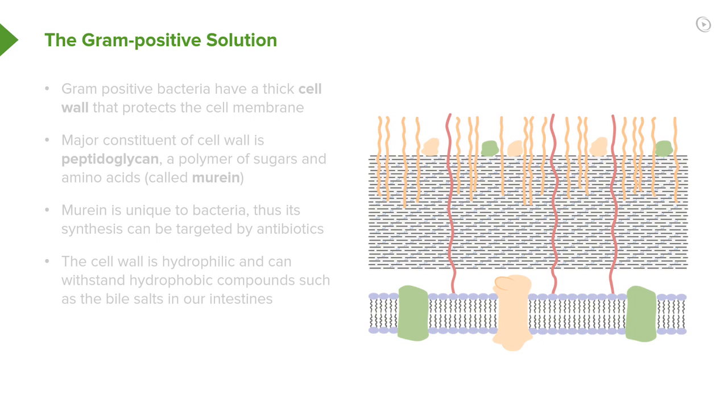So let's look at this in a little more detail. The thick cell wall again is called the peptidoglycan or murine. It's a polymer of sugars and amino acids. This structure is unique to bacteria. We don't find it anywhere else in the kingdom of life and that's why we can target its synthesis using antibiotics.